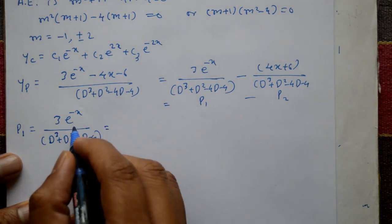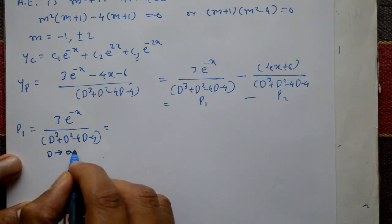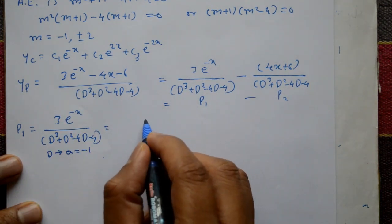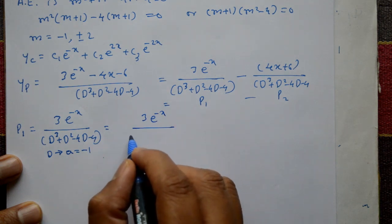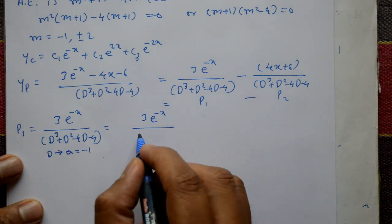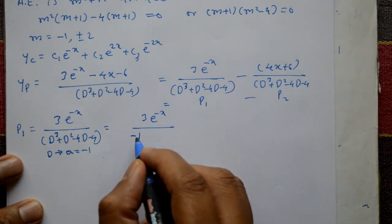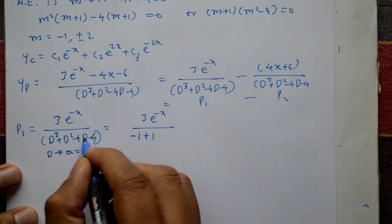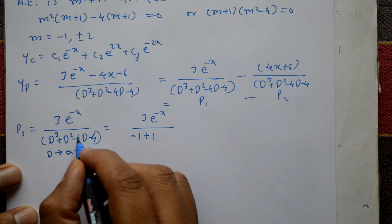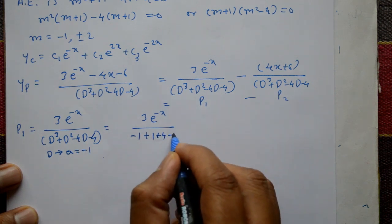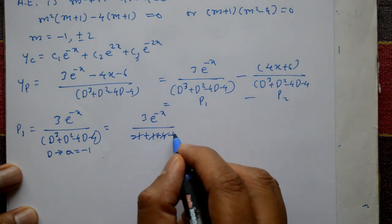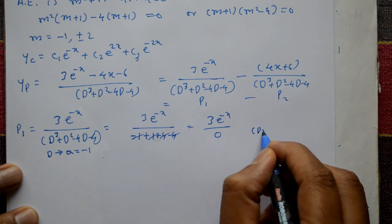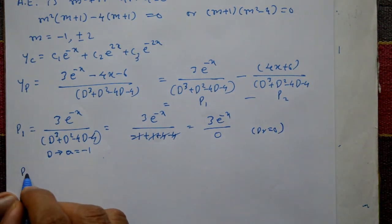For P1, this is Type 1: substitute D = a = -1. So the denominator becomes (-1)³ + (-1)² - 4(-1) - 4 = -1 + 1 + 4 - 4 = 0. Since the denominator is 0, we must multiply the numerator by x.